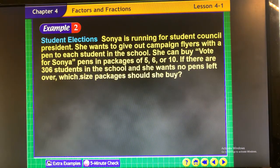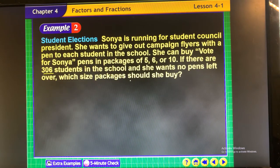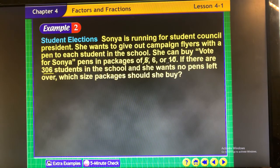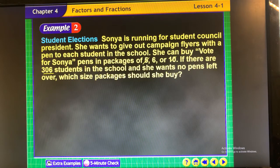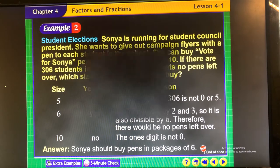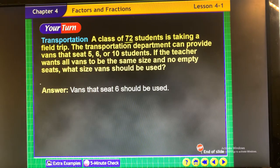Sonia is running for student council president. She wants to give out campaign flyers with a pen to each student in the school. She can buy vote for Sonia pens in packages of 5, 6, or 10. If there are 306 students in the school, and she doesn't want any pens left over, basically I want to know which of these numbers go into this number evenly with no remainders. Well, we can definitely say no to 5 and 10, because it doesn't end in a 5 or a 0. So obviously it must be 6.